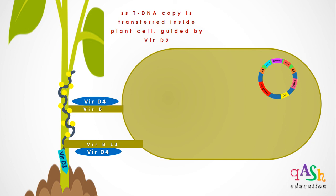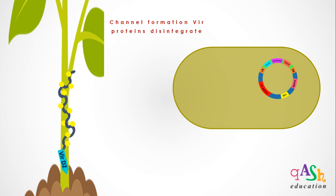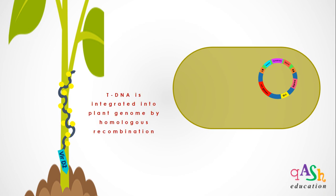The single-stranded T-DNA copy is finally transferred inside the plant cell, with VirD2 still attached. After the T-DNA copy is inside the plant cell, the channel formation proteins VirB, VirB11, and VirD4 disintegrate. Inside the plant cell, VirD2 guides the single-stranded T-DNA copy into the plant nucleus, where the T-DNA integrates into the plant genome by homologous recombination.